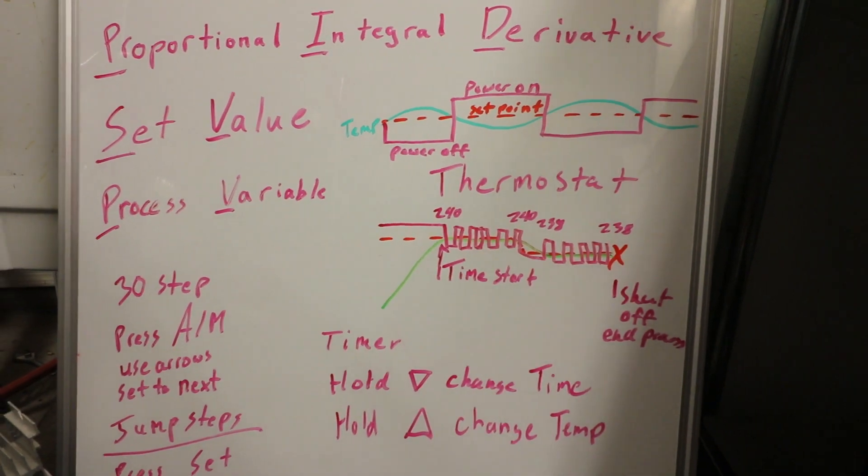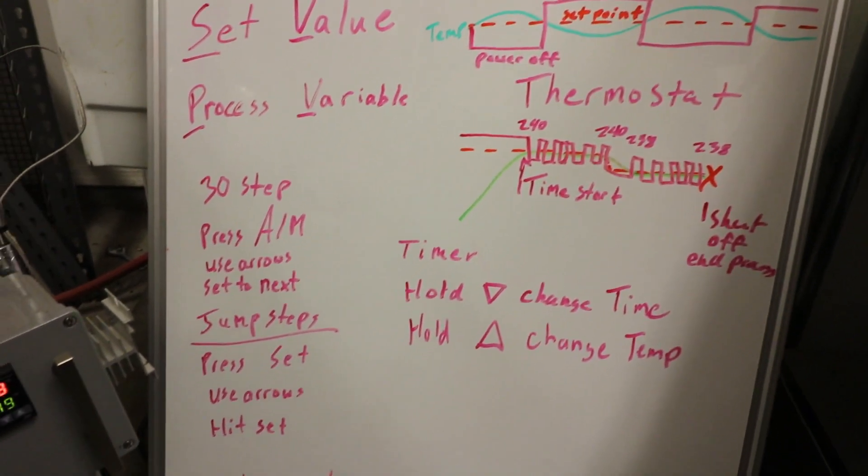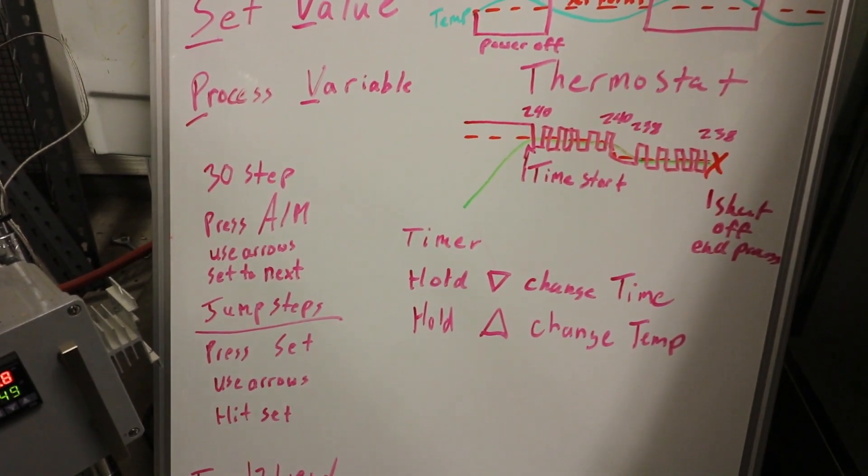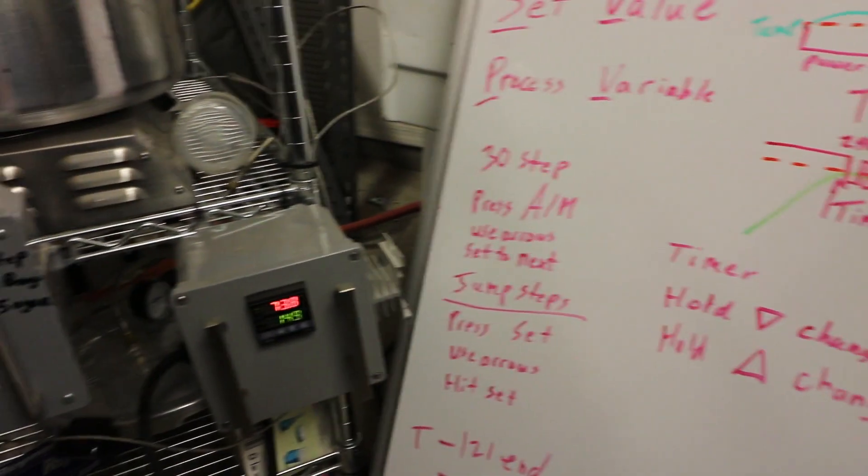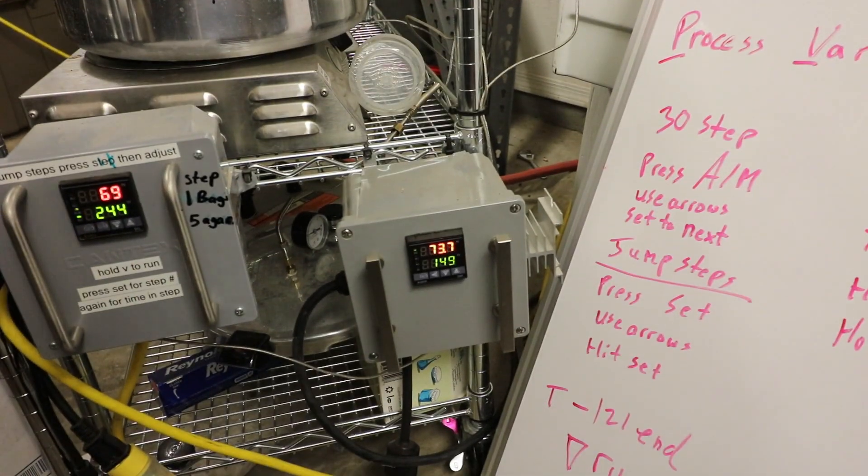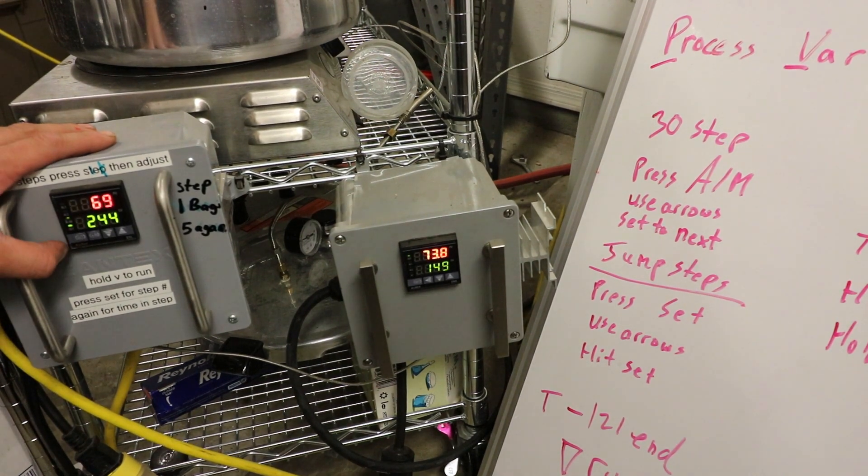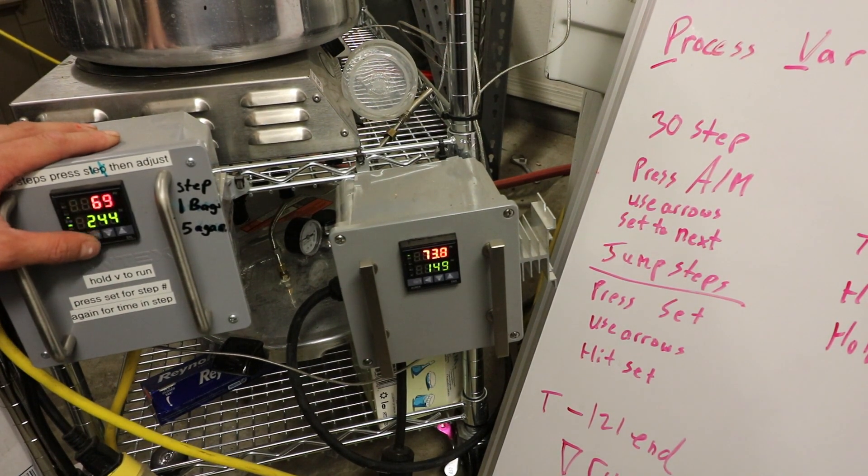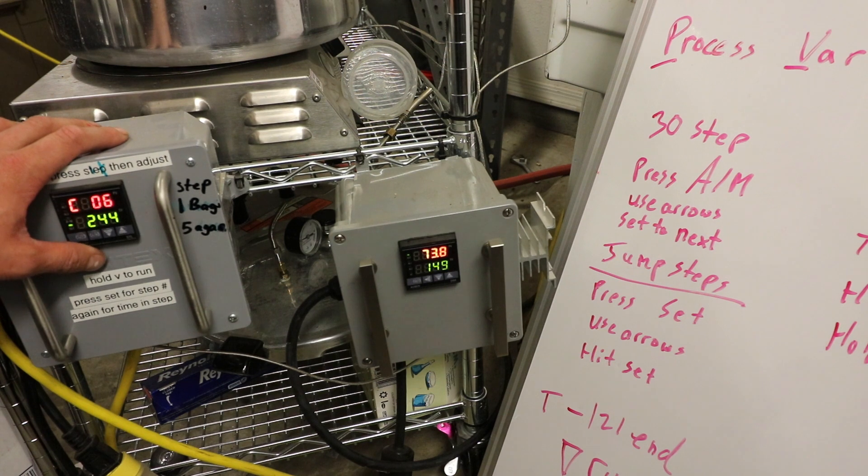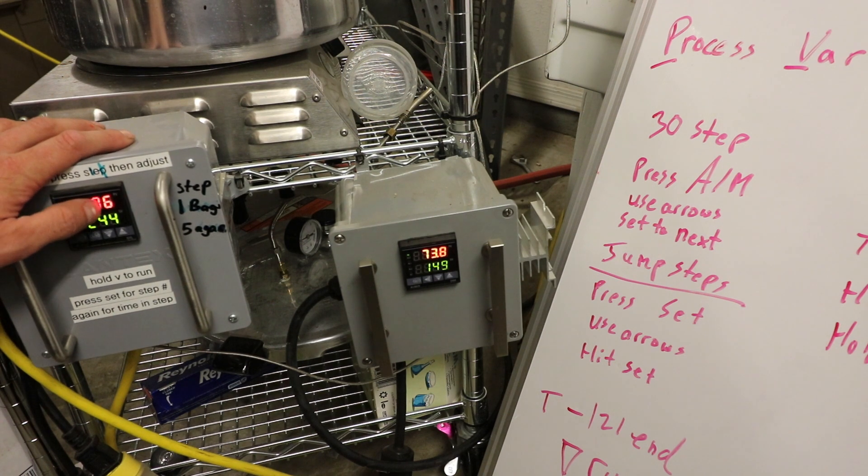Alright, so now the fun stuff, the programming. I'm going to start off with the 30-step ramp soak. So for starters, you're going to want to press AM, and that's going to get you into the temperature step mode.